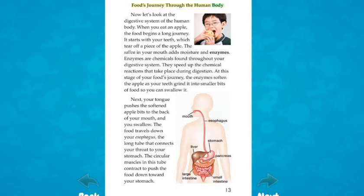Food's journey through the human body: when you eat an apple, the food begins a long journey. It starts with your teeth, which tear off a piece of the apple. The saliva in your mouth adds moisture and enzymes — chemicals found throughout your digestive system that speed up the chemical reactions during digestion. The enzymes soften the apple as your teeth grind it into smaller bits so you can swallow it. Then your tongue pushes the softened apple bits to the back of your mouth and you swallow. The food travels down your esophagus, the long tube connecting your throat to your stomach, where circular muscles contract to push the food downward.